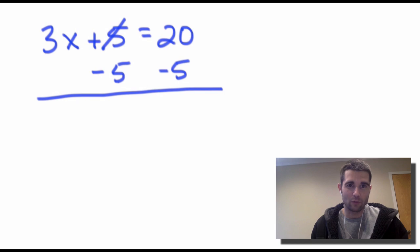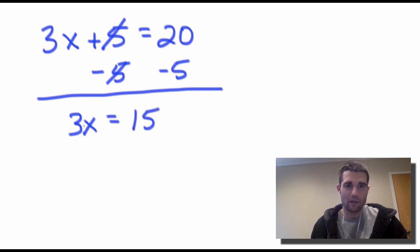Here on the left, the 5s will cancel, and all we'll have left is the 3x on the left, and 20 minus 5 will give us 15. Now when we look at the left here, 3x, that's basically 3 times x. So the opposite of multiplication is going to be division by 3.